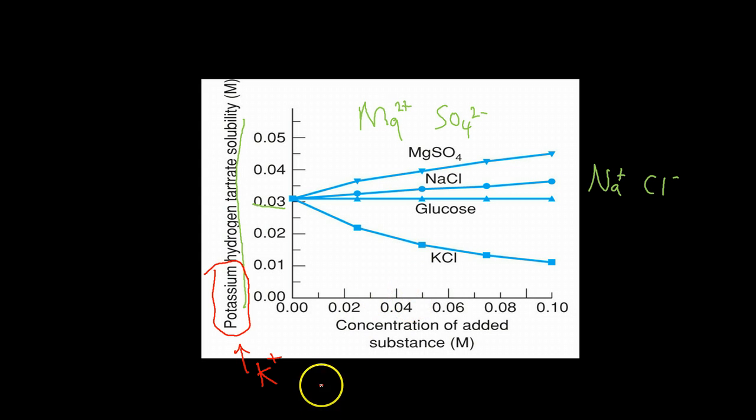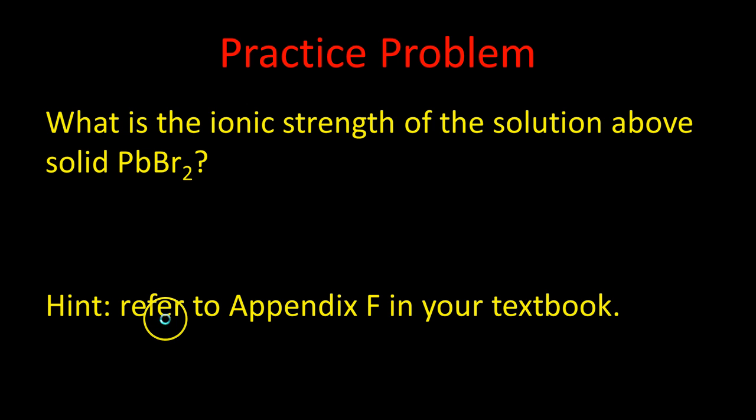So we're going to explore this a lot more in detail when we're talking about activity coefficients, which will follow up in the seventh POGIL exercise. But I'd like to end with running through a quick practice problem. So hopefully you can follow along and everything I'm saying sort of makes sense to you. So this is the type of question you might get on an exam or a quiz or something like that and say something like, what is the ionic strength of a solution above solid PbBr₂? That's not PBR, the beer, that's lead bromide.